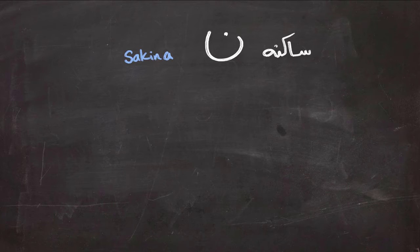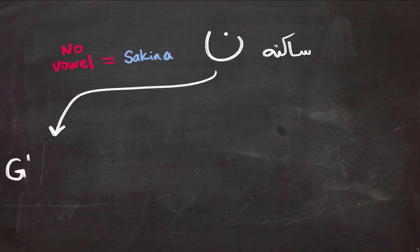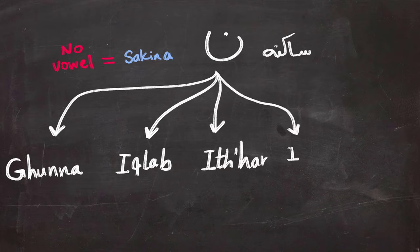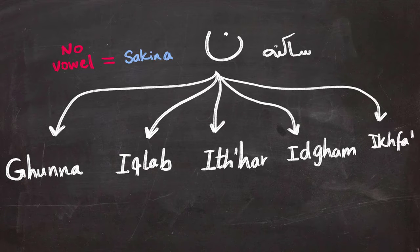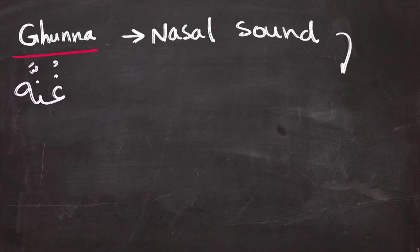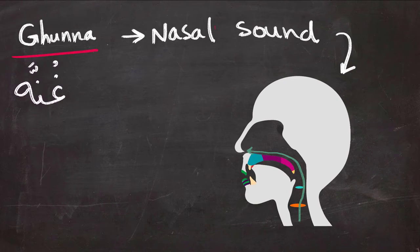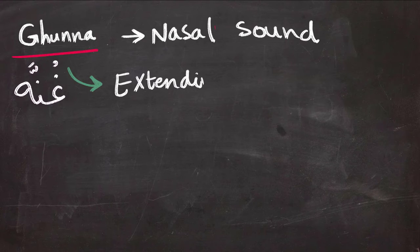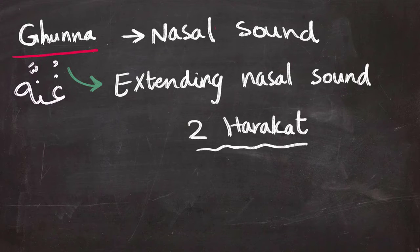There are five consequences to having noon sakinah in the Holy Quran. We're going to start with ghunnah. Ghunnah refers to the nasal sound produced through air streaming through the nasal cavity. In Quran, it means extending the nasal sound for two harakat — that's about one second.